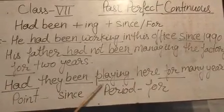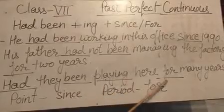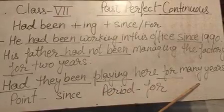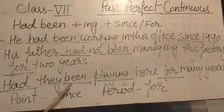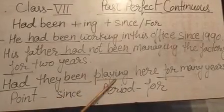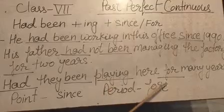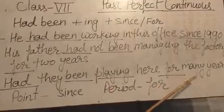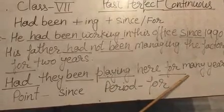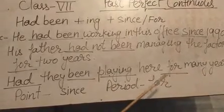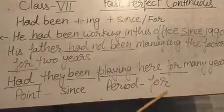Next: Had they been playing here for many years? Here had been playing — and for, because the time is not sure. This is a period of time, that is why we use for.